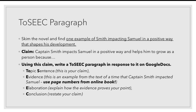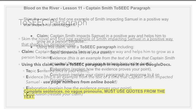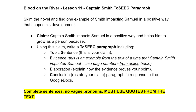Are you getting sick of two-paragraph responses yet? Just think of how impressed your seventh grade teachers are going to be that you can write a whole paragraph using evidence that explains your point. Your task for this week is to skim the novel and find one example of Captain Smith impacting Samuel in a positive way that shapes his development — very similar to your prompt from last week about Reverend Hunt, except this time it's Captain Smith. I have given you your claim to start off your response: Captain Smith impacts Samuel in a positive way and helps him grow as a person because... You're going to write this directly on Google Docs. You'll have a topic sentence — that's your claim. Then you will use evidence, which is a quote from the text. You can use page numbers from the online book.